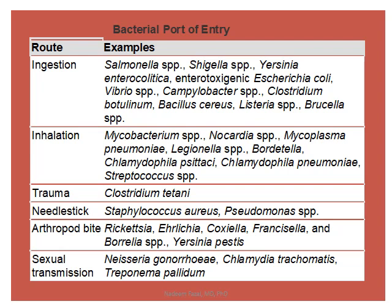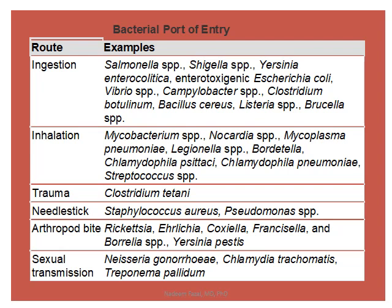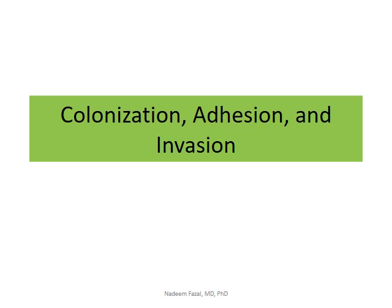Regarding colonization, adhesion, and division — this chapter provides useful comparison tables. You can see for example that Staphylococcus aureus uses lipoteichoic acid (LTA) as an adhesin, and Streptococcus pneumoniae uses a protein. Knowing the complementary receptor — like how CD4 binds MHC class II, or CD8 its counterpart — allows us to consider blocking adhesion therapeutically.